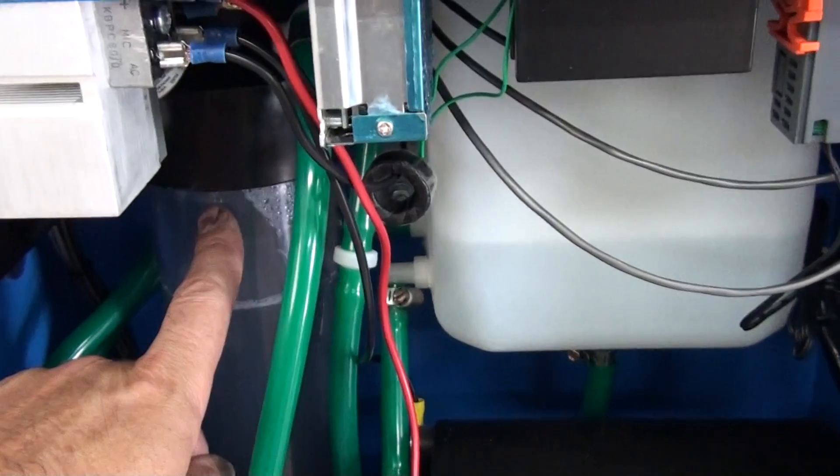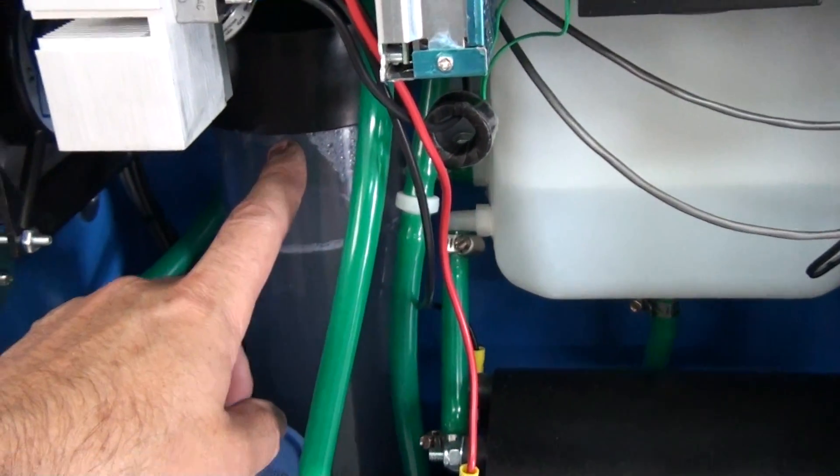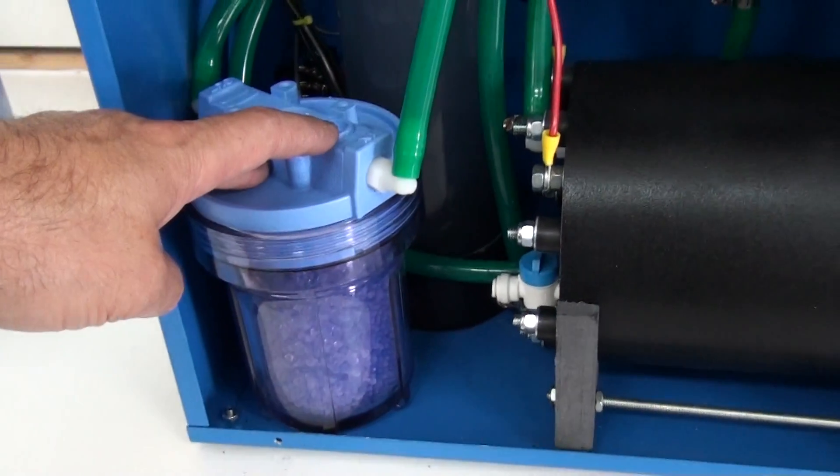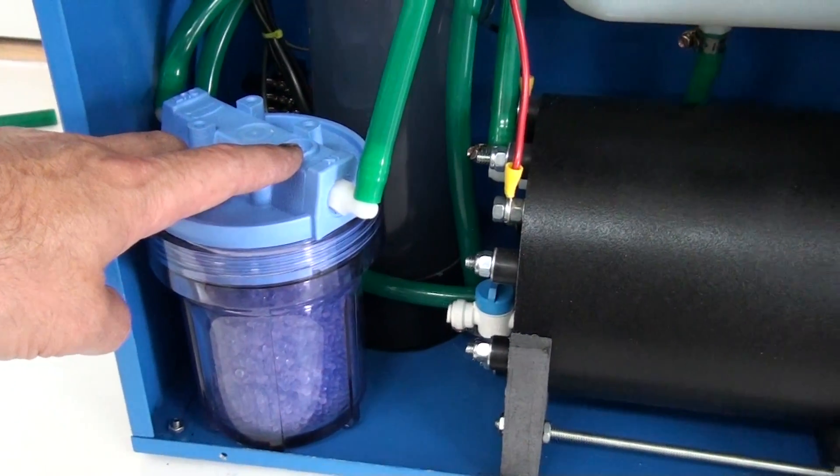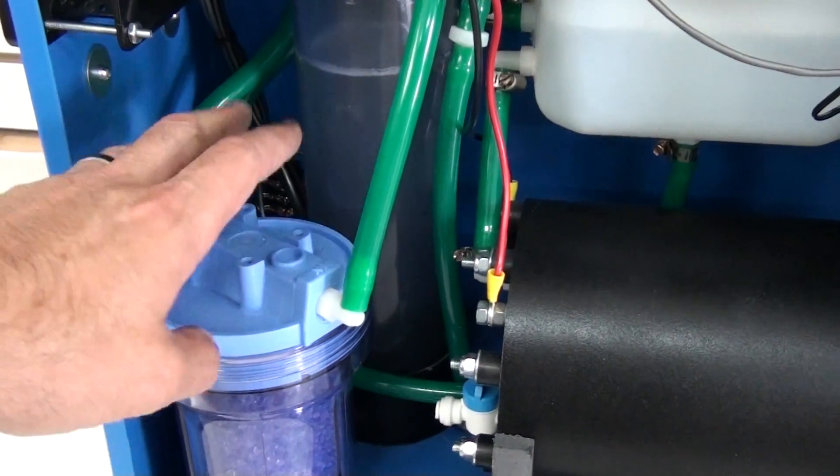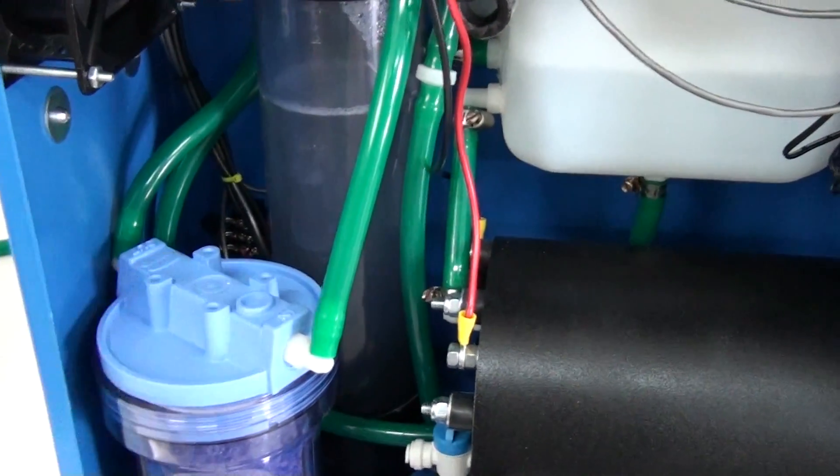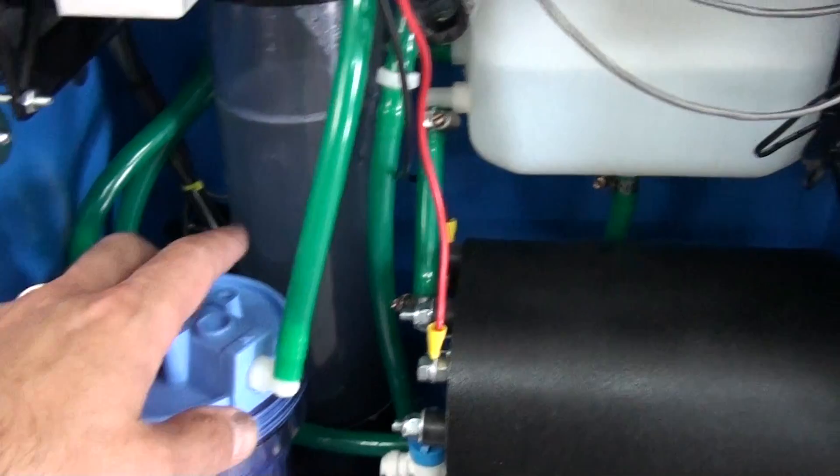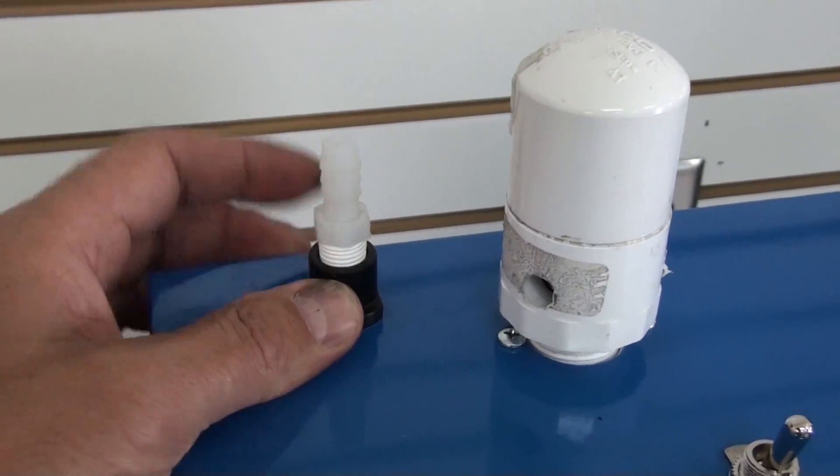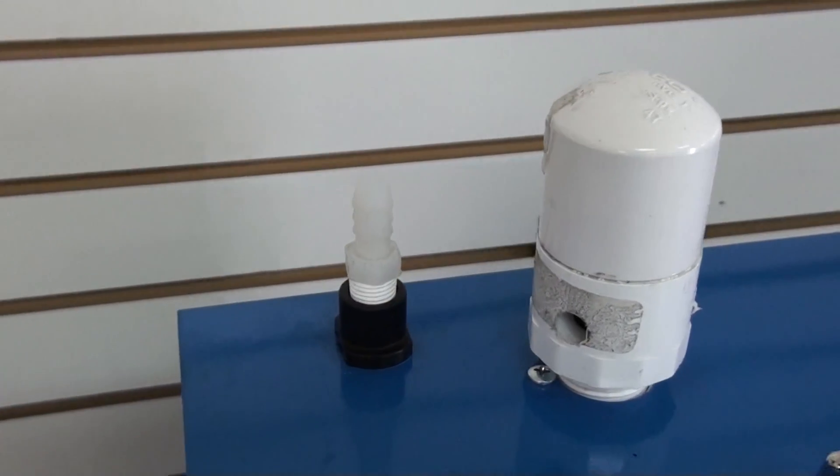From the bubbler, the HHO goes into a flash suppressor. If there is any type of ignition to the hydrogen, this here will stop it. And then it goes out of that to the output port and you can hook whatever device you want to that.